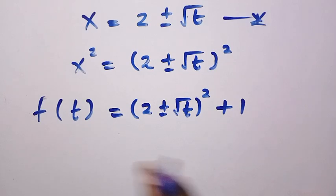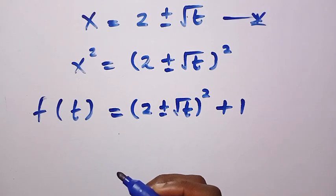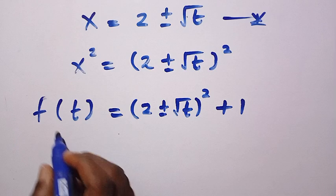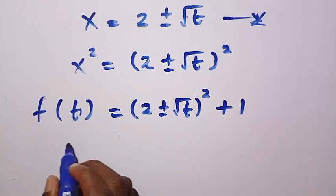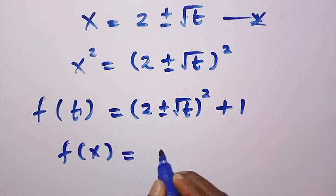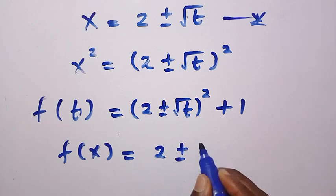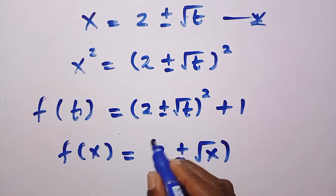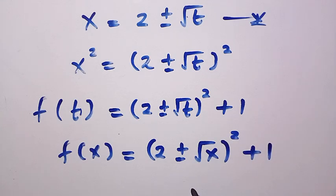Since t and x are both members of the real numbers, they are interchangeable. Replacing t with x, we get f of x equals (2 plus or minus the square root of x) all squared plus 1.